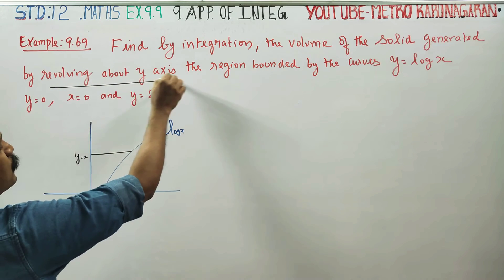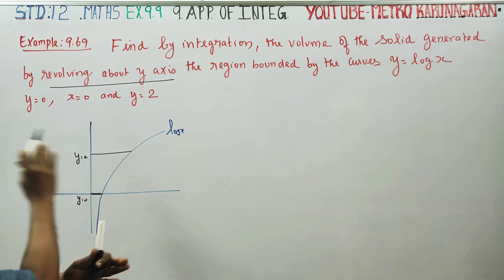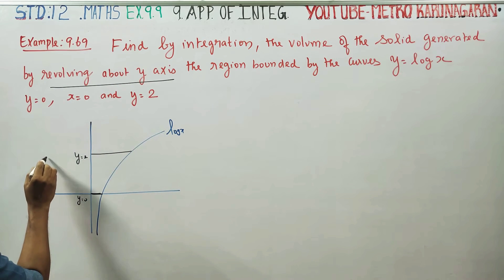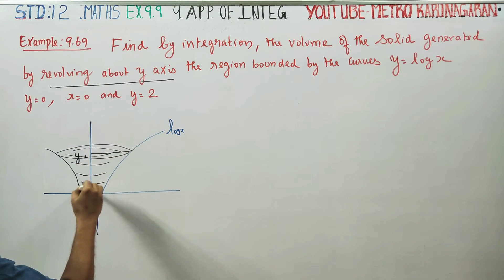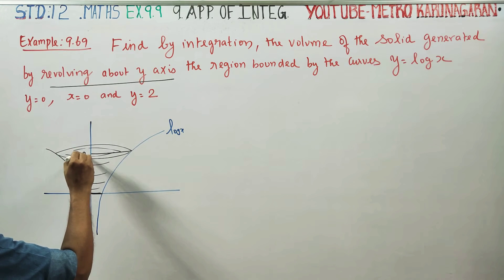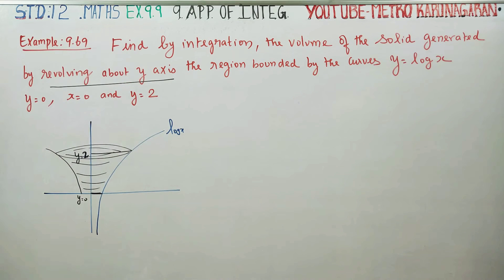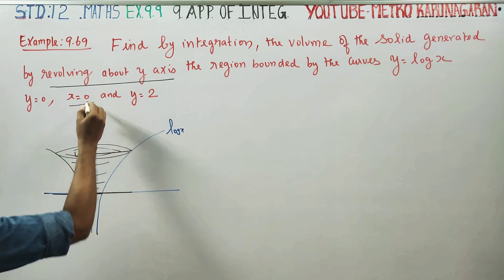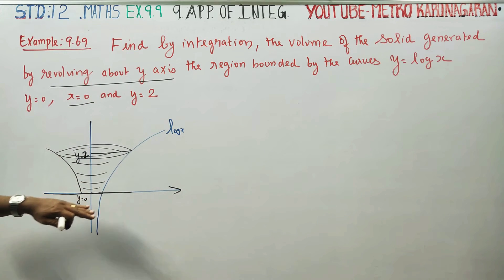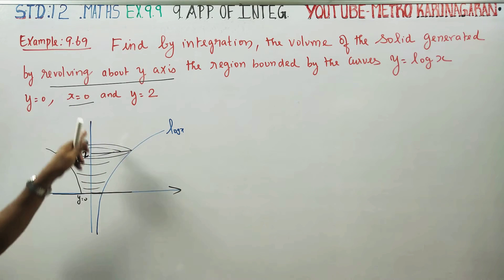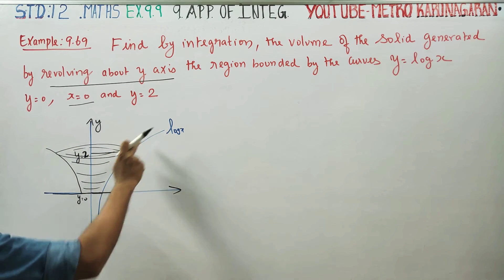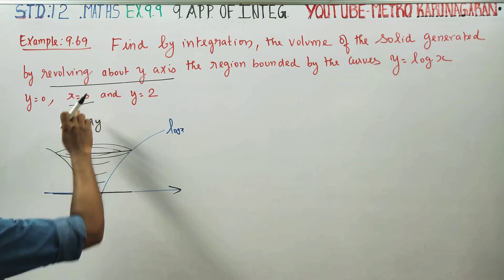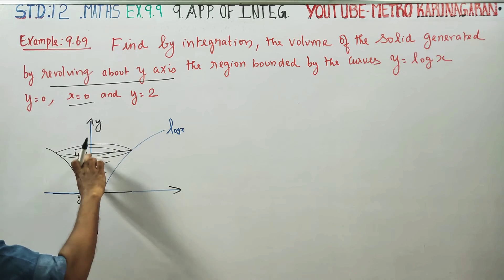Revolving about the y-axis — the region revolves to form a three-dimensional solid. With y = 2, y = 0, x = 0 as the y-axis, and x-axis as limits, we rotate all boundaries: y = log x, y = 0, x = 0 (y-axis), and y = 2 about the y-axis.